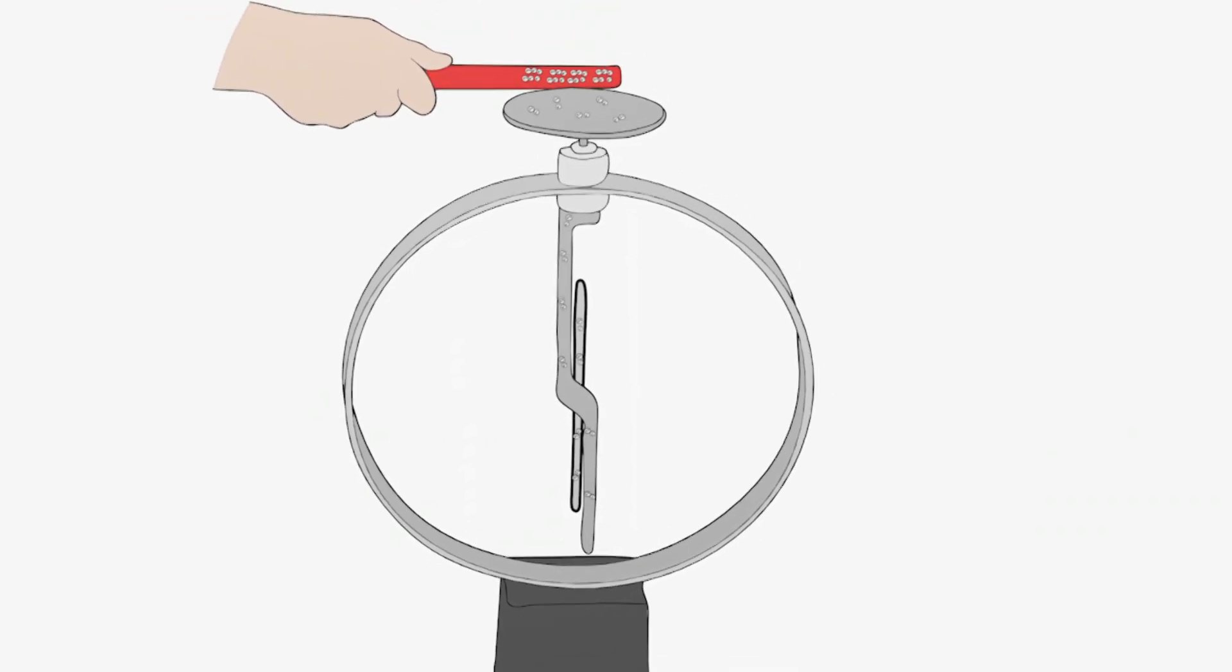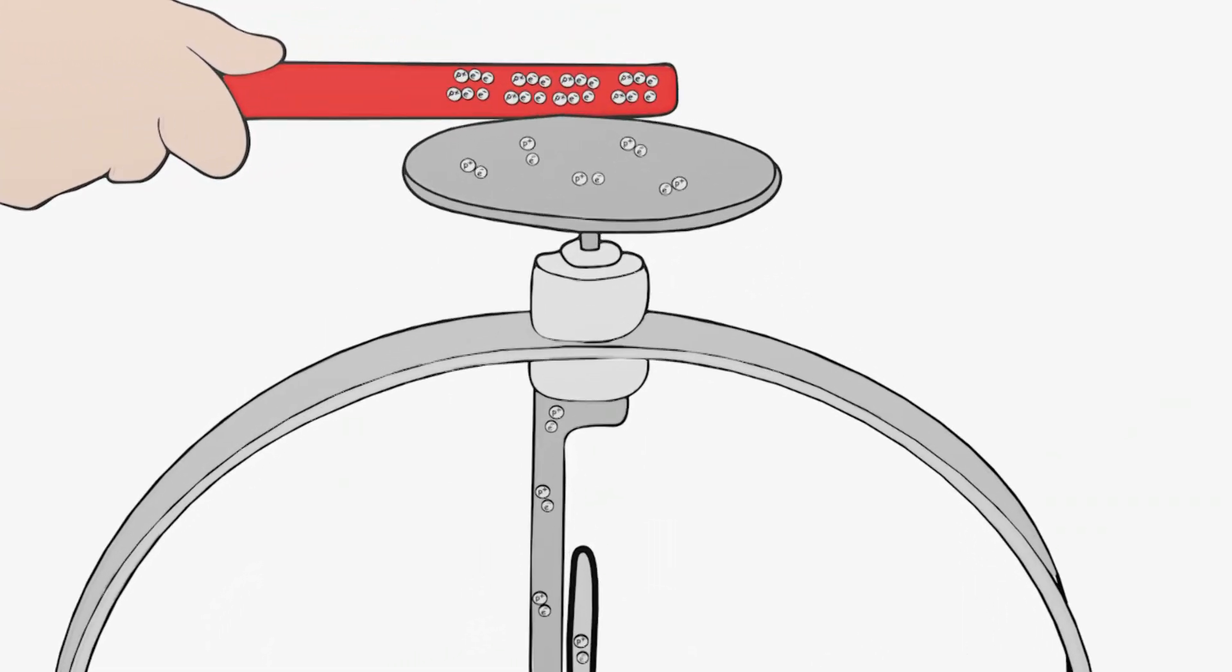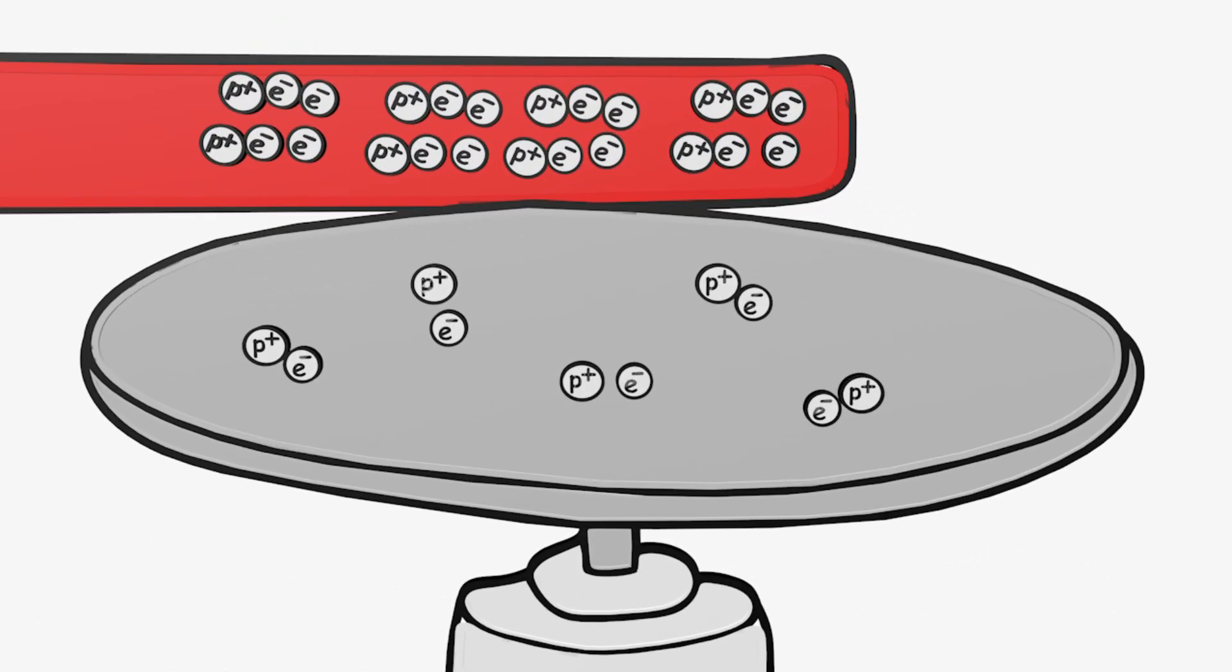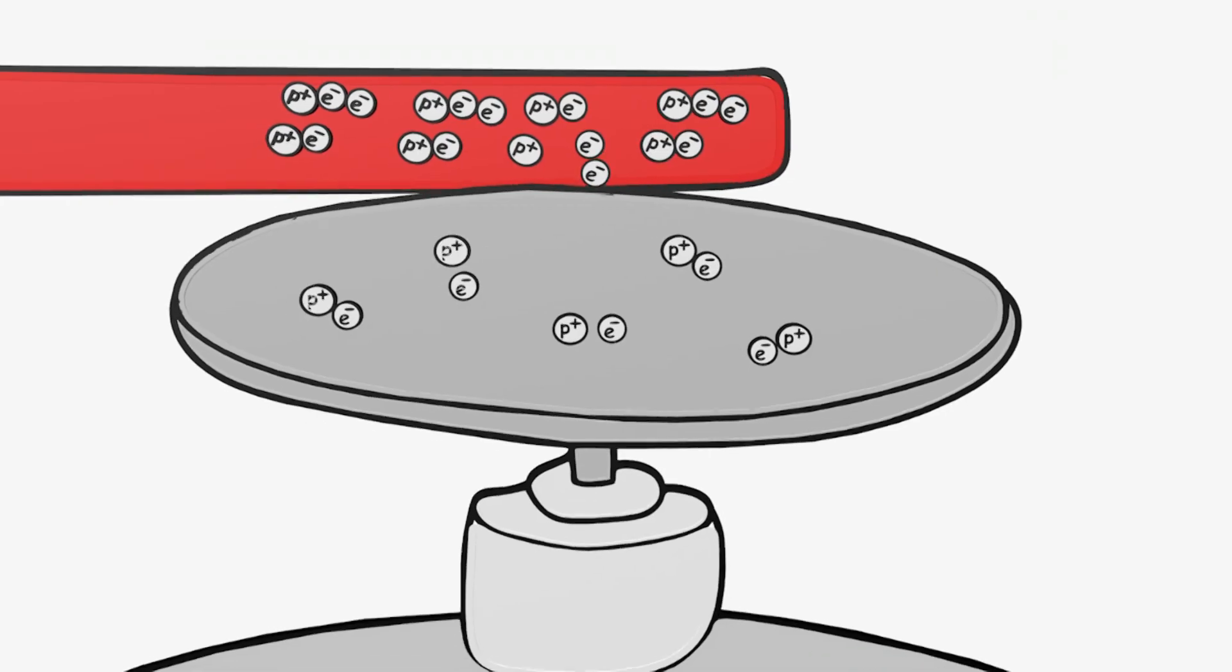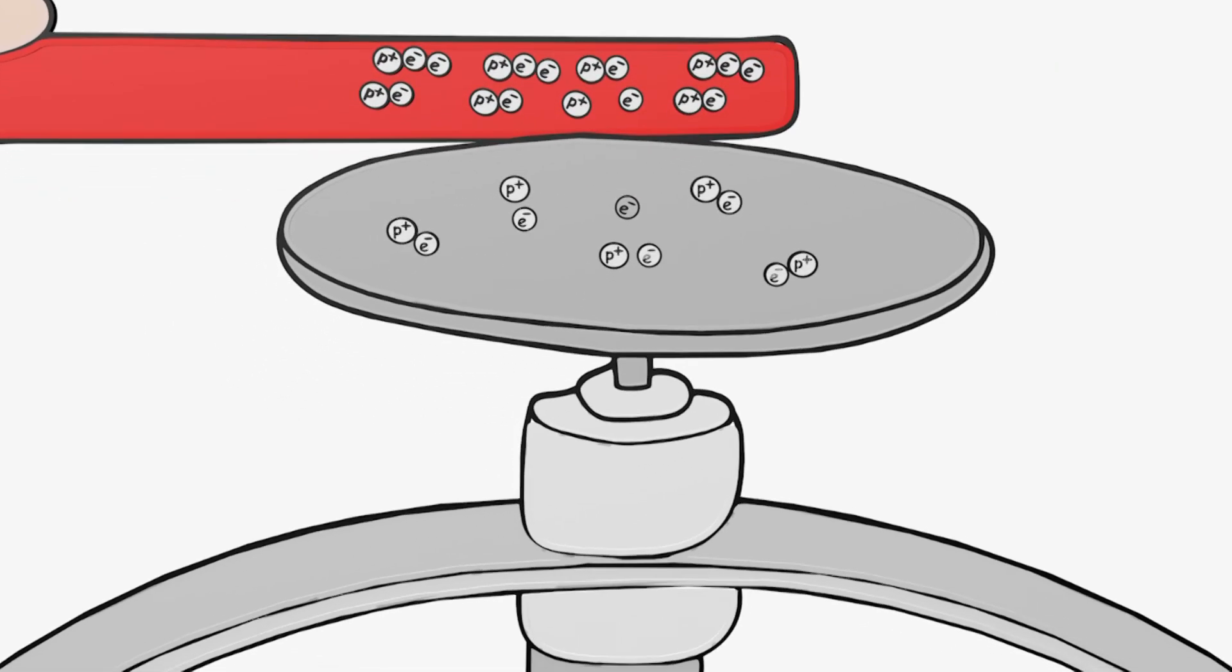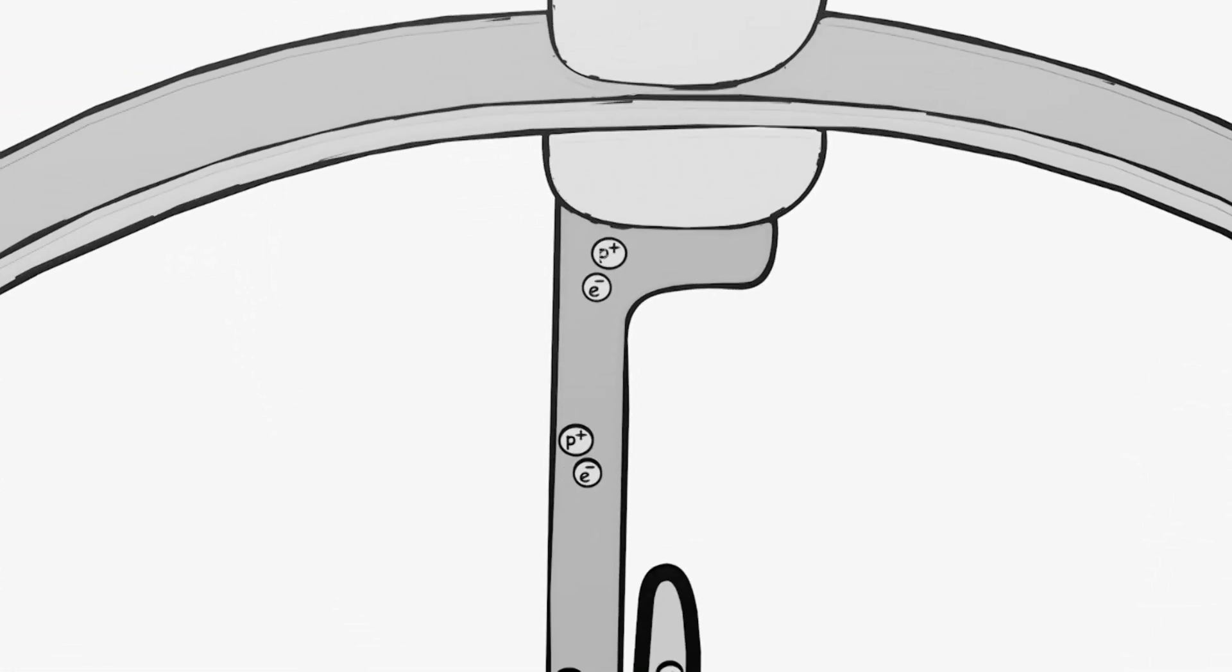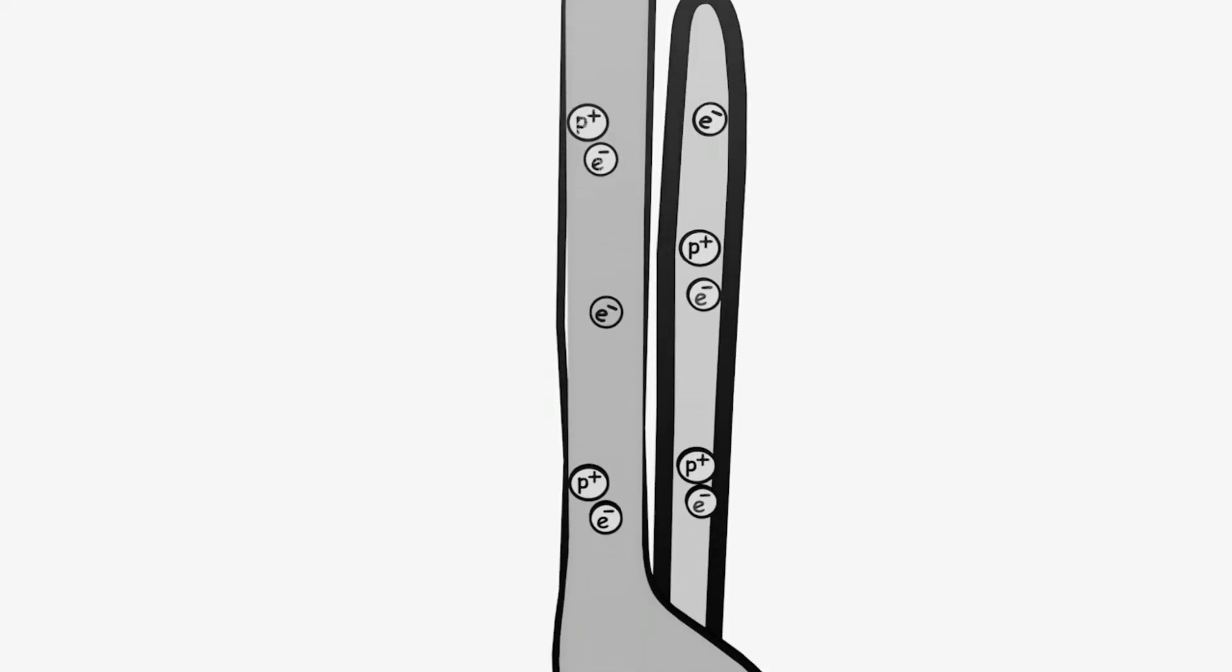Now let's consider the case where we hold the negatively charged PVC rod to the metal cap of the electroscope. Some negative charges now flow onto the cap and are evenly distributed over the metal cap, the metal rod, and the needle.